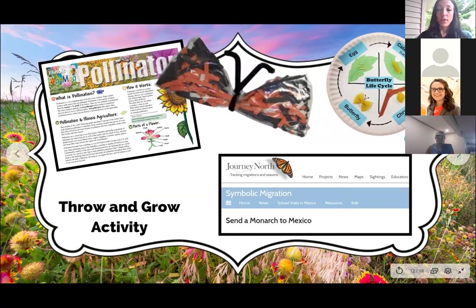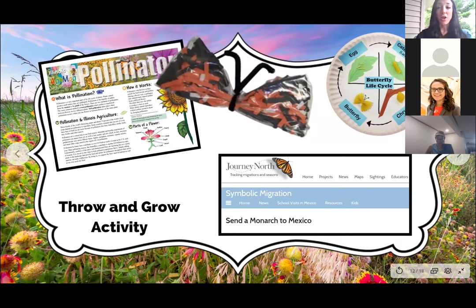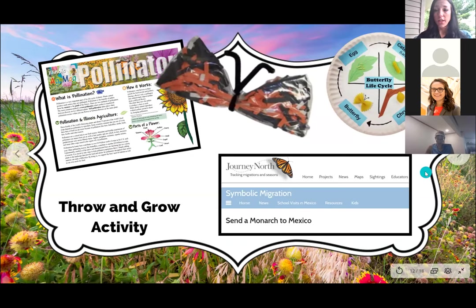We have the butterfly life cycle activity using pasta — different types of pasta represent the different stages of the life cycle. You can connect that with the silkworm activity. For really young students, you can just glue the pasta straight onto a sheet of paper that already has the stages labeled. The level of detail depends on the age group you're teaching and how much hands-on work you want to do.